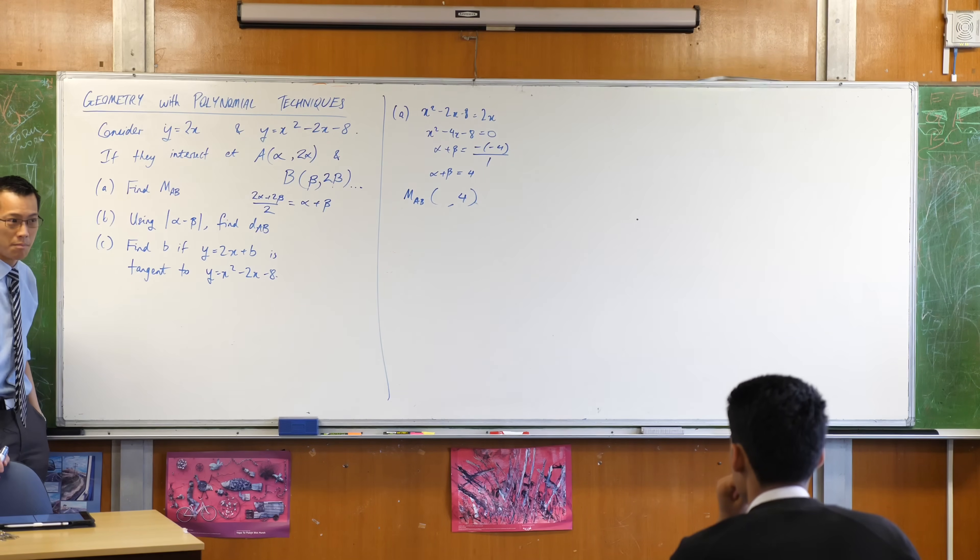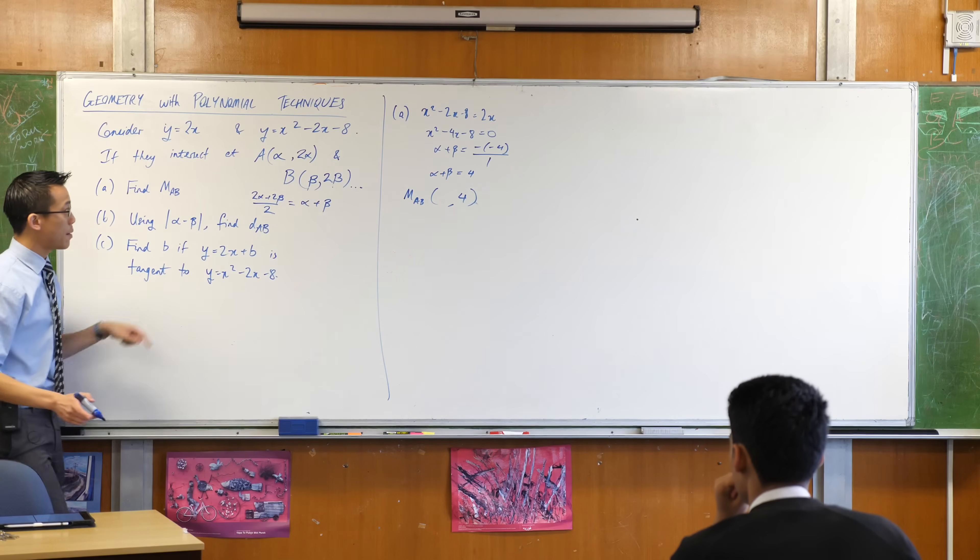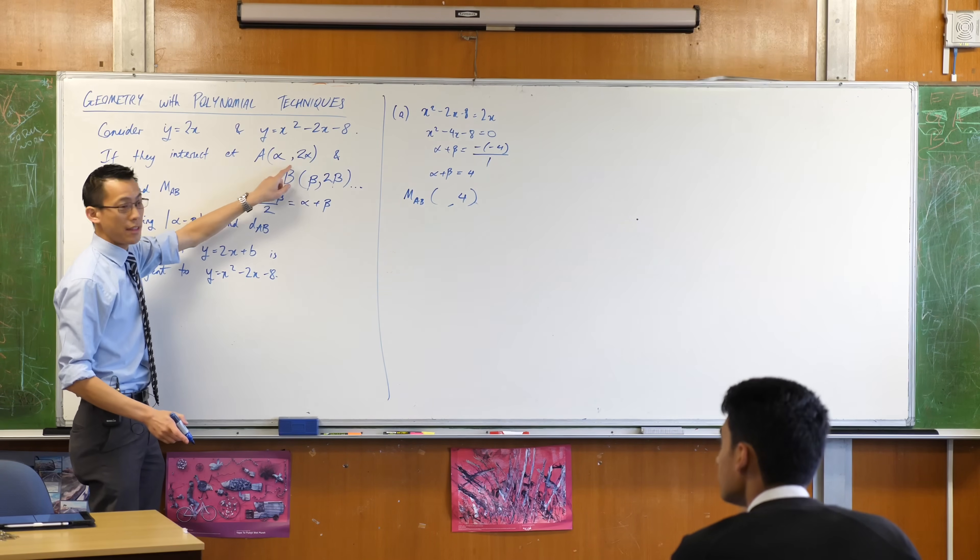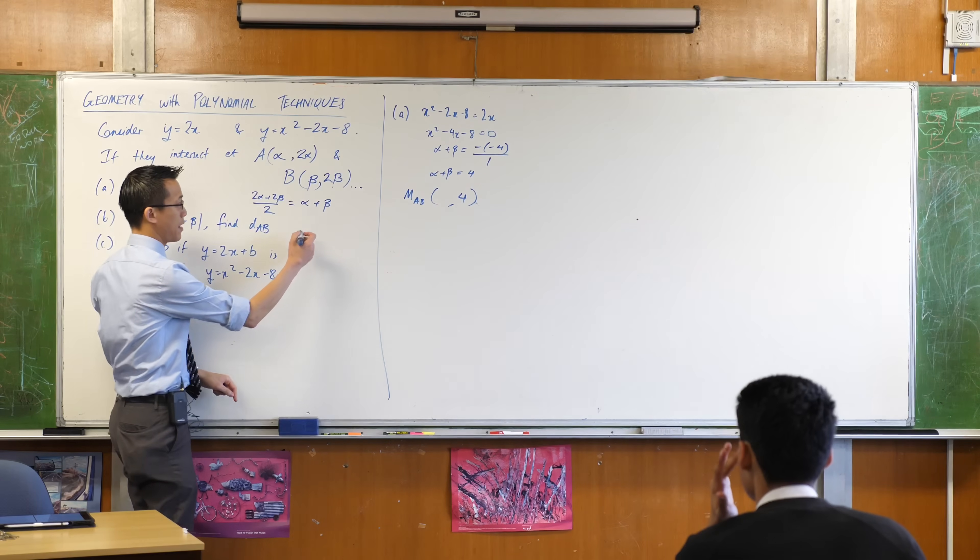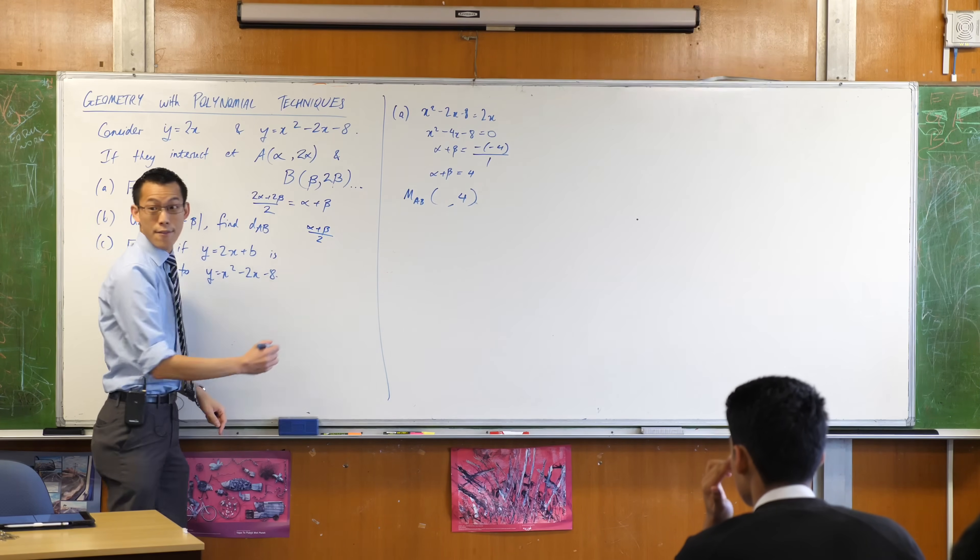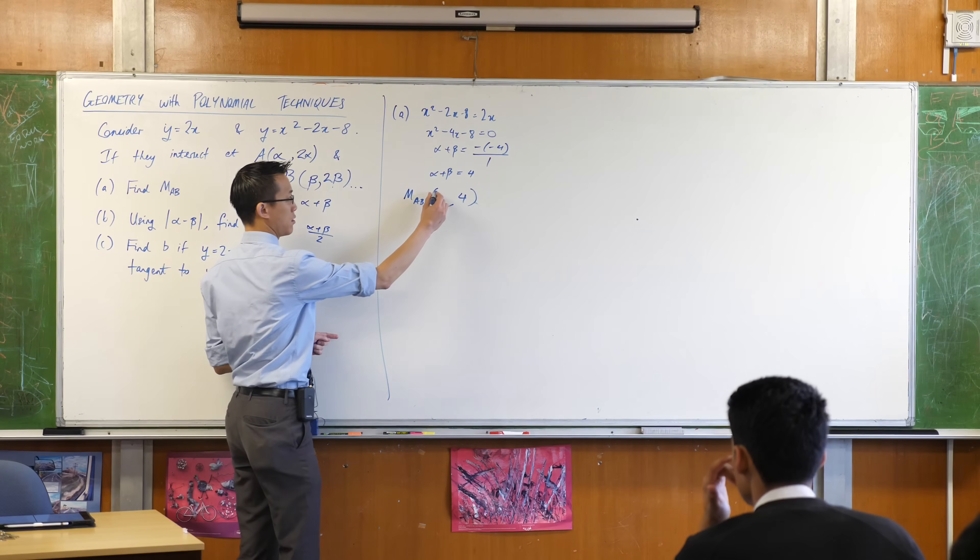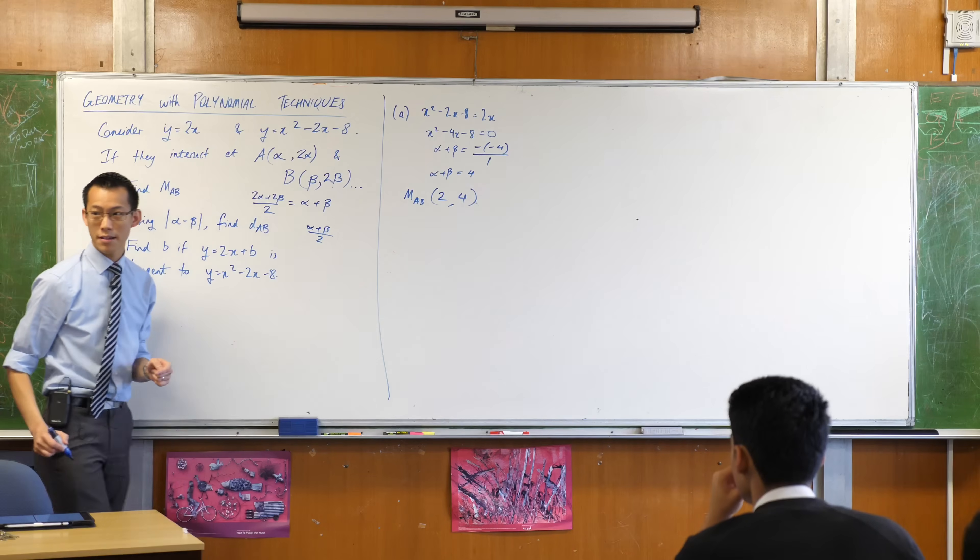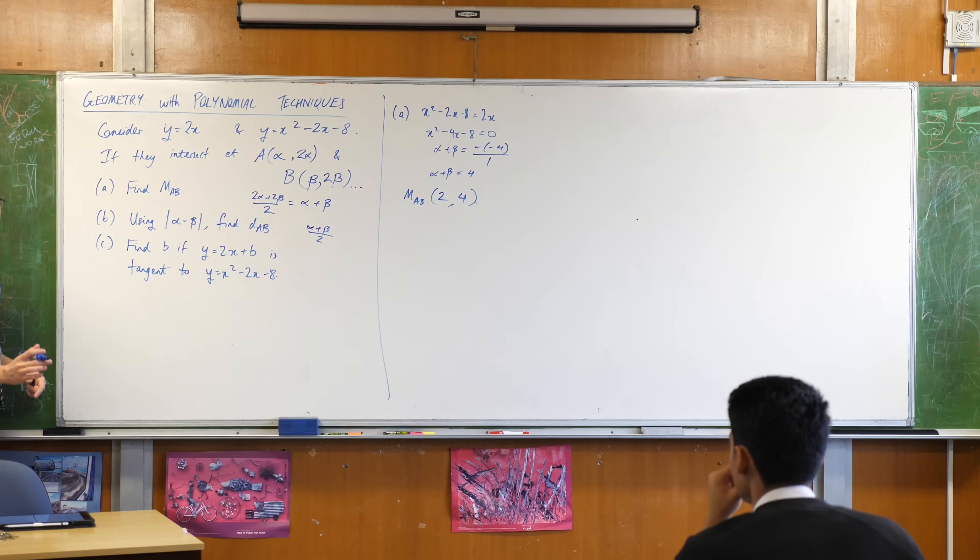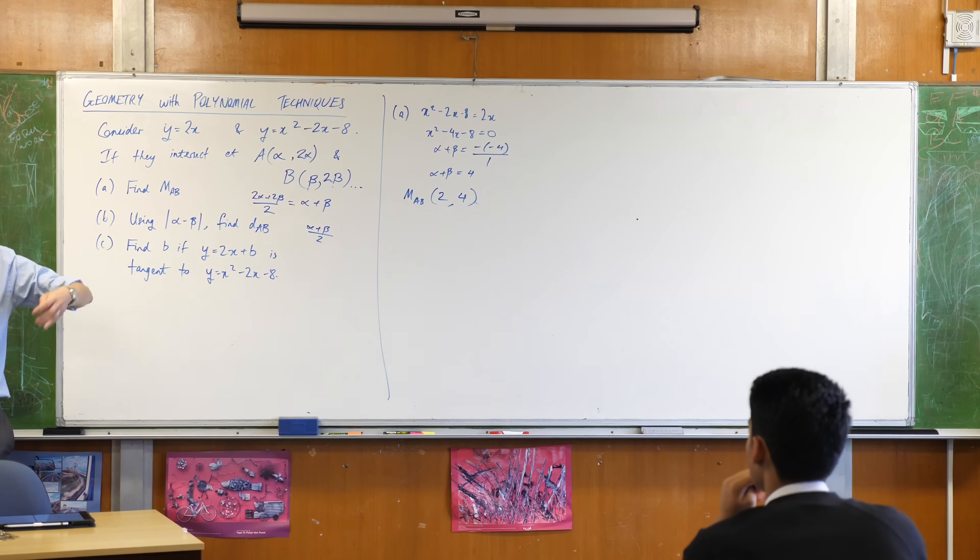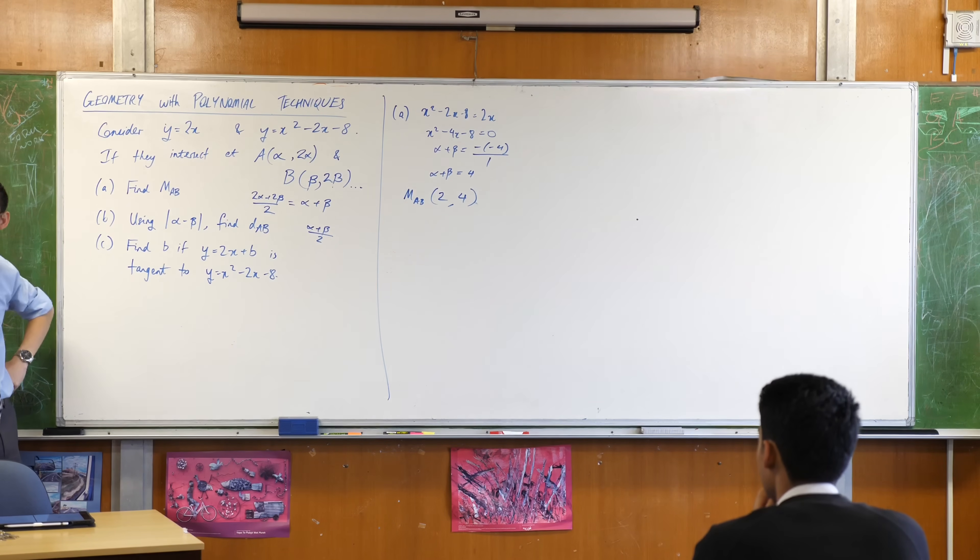I can substitute this into the line AB because it's on AB. The only problem with that is I don't know what AB is, at least I don't know it yet, and I would have to find that. Is there a simpler way I could do this using information I kind of already have? Yeah. Remember we said before if I wanted to find the midpoint of AB, it's going to be (α + β)/2, that's the average of the x coordinates, so therefore it's just going to be 2.